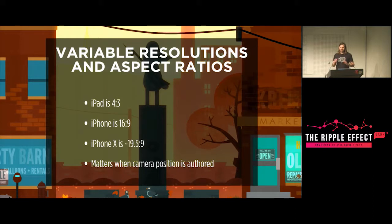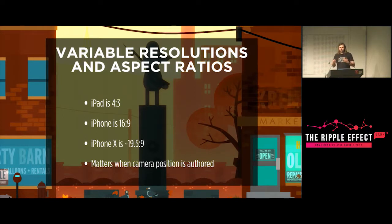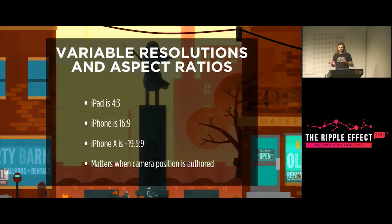This matters quite a lot in a game where the camera position is authored. The position of the camera in Night in the Woods is very precisely chosen — we make sure that only the things the player needs to see are on screen. This is different to games where the player has control over the camera. In this case we have to do special stuff to make sure we always constrain to a certain aspect ratio, because otherwise we have to re-author every scene.